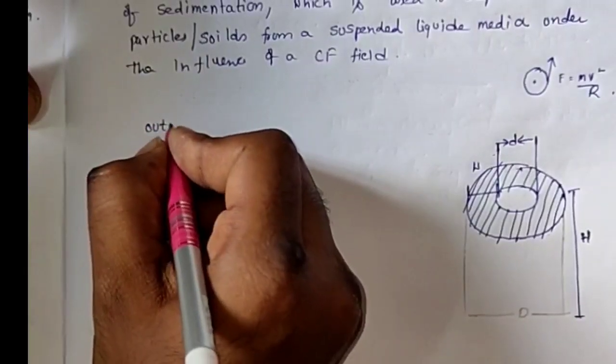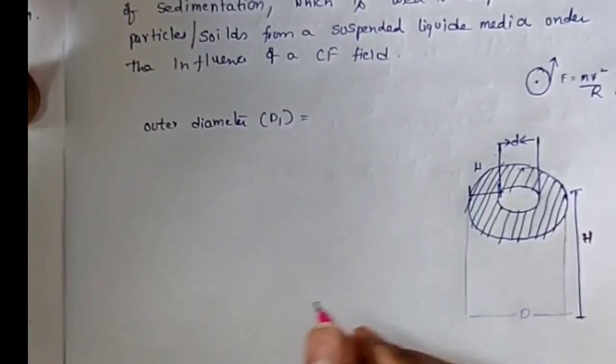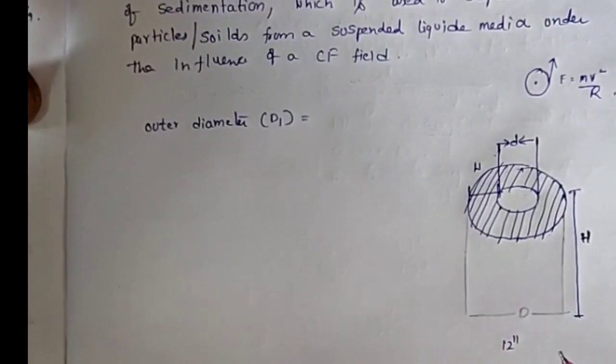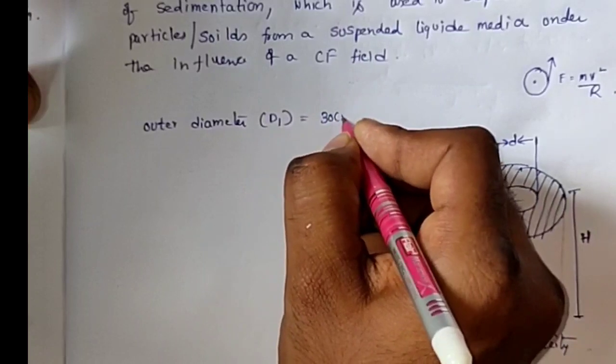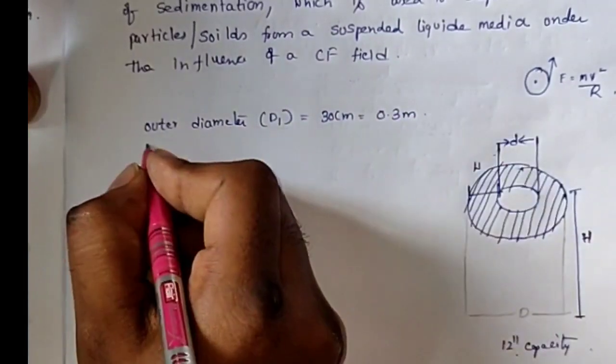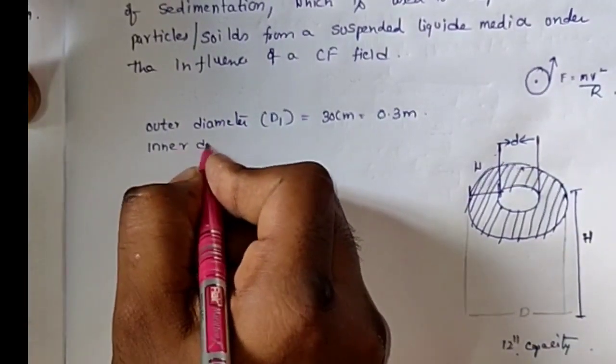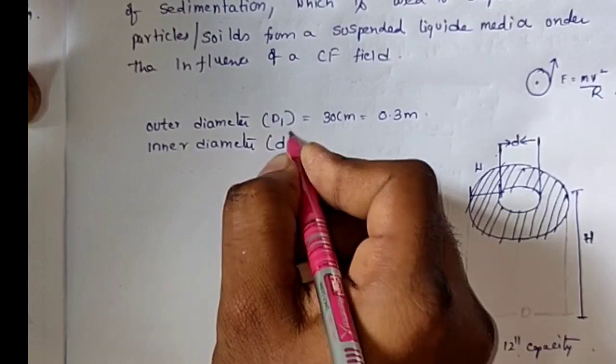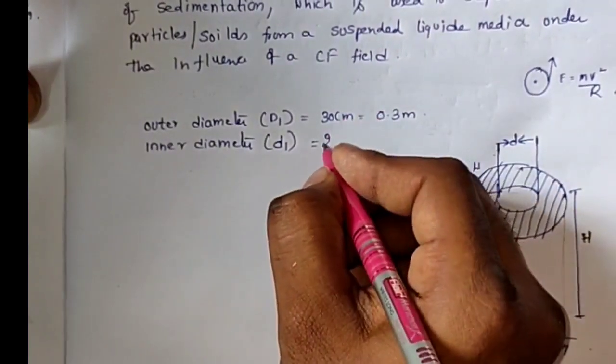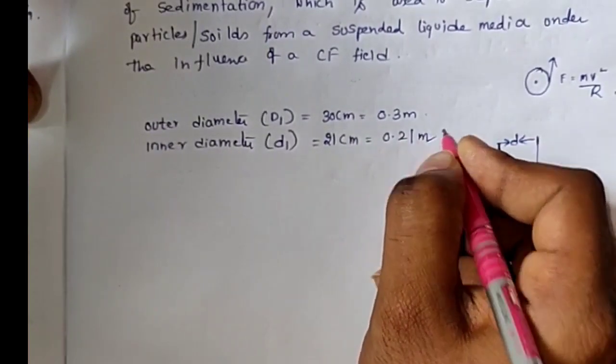The outer diameter, capital D, for a 12 inch capacity centrifuge is 30 cm, which equals 0.3 meters. And the inner diameter, small d, is 21 cm.